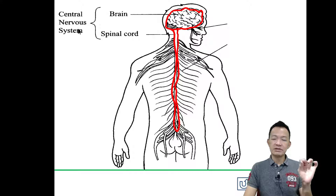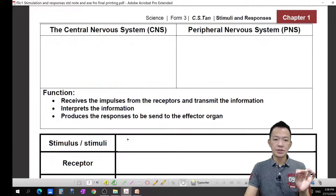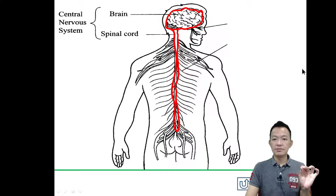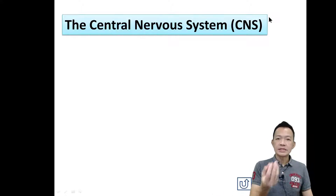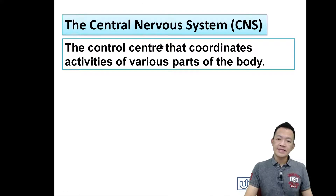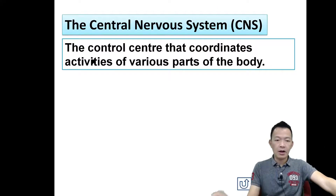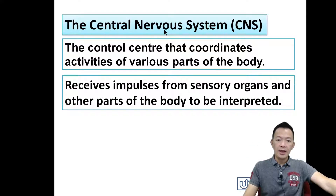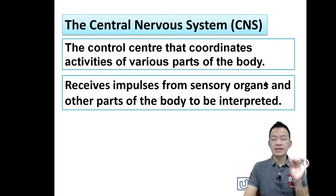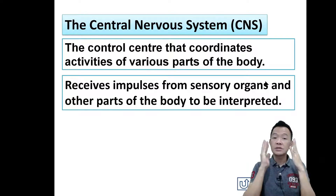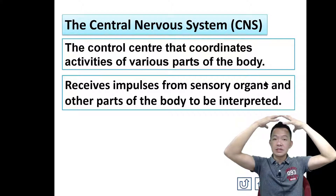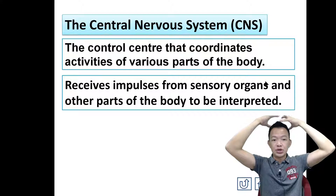Turn to notes page number two. What is the Central Nervous System? It is the control center — 控制中心 — that coordinates the activity of various parts of the body. It receives impulses from the sensory organs and interprets the nerve impulses. Think of it as the processor of the human body — the control and coordination center.